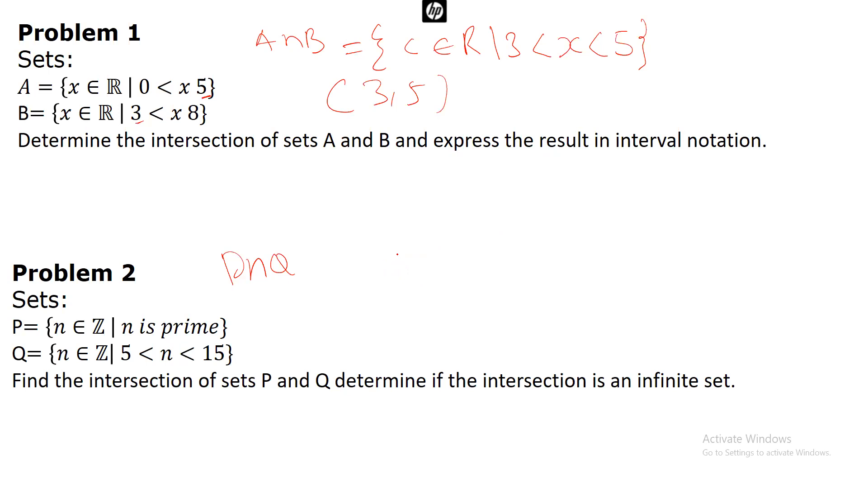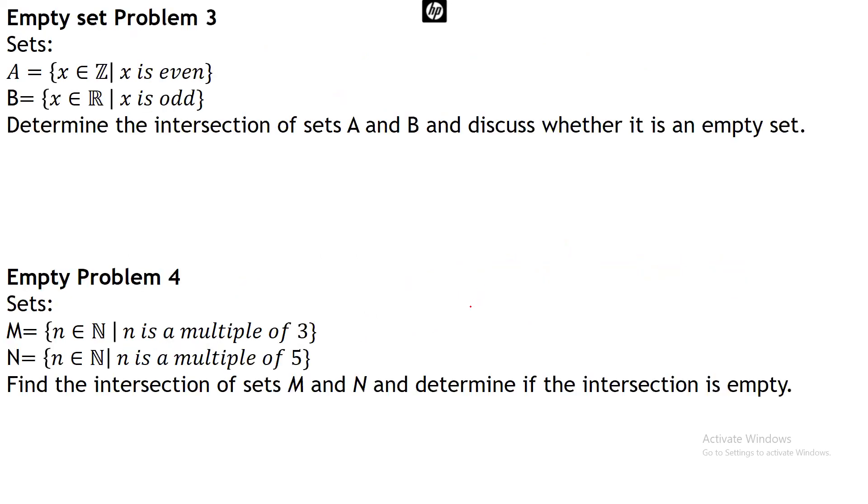Now our solution will be P intersection Q will be, of course, now we'll have 5, 7, 11, 13. Because the intersection has to be finite, there are finite number of numbers within this range. So this is our solution for this intersection problem. So you need to take note of the notation.